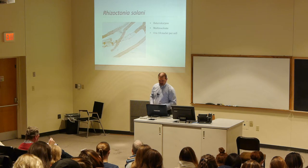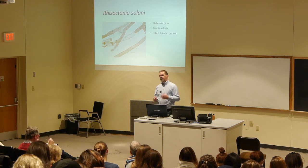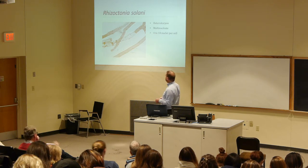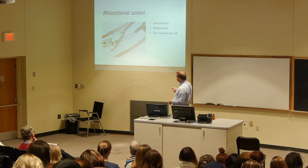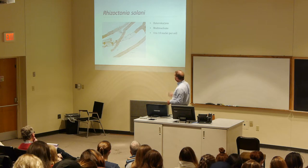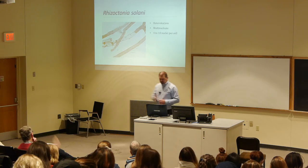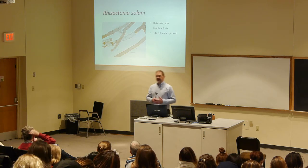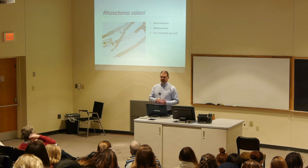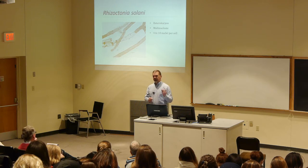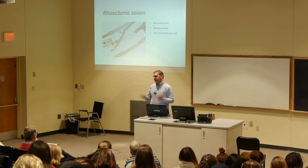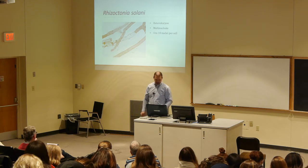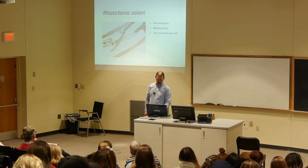Rhizoctonia is a heterokaryon, but even more than that it's multinucleate — a single cell can have anywhere between four and ten haploid nuclei in it. How it regulates those nuclei nobody knows, and that would be a good project for somebody to figure out.